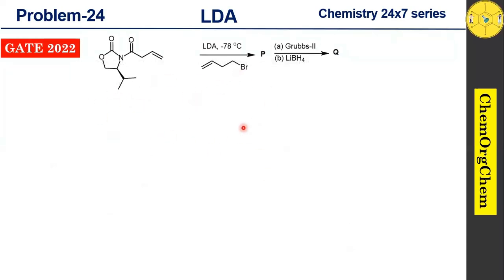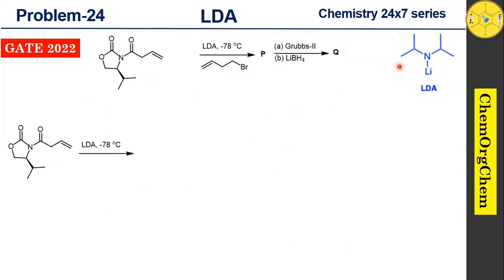The first reaction condition is LDA. LDA is a non-nucleophilic, sterically hindered strong base that readily abstracts the proton from an alpha position. LDA is particularly useful for generating an enolate ion by deprotonating the less hindered site of a substrate. It can also abstract protons from benzylic positions and aromatic alpha positions.